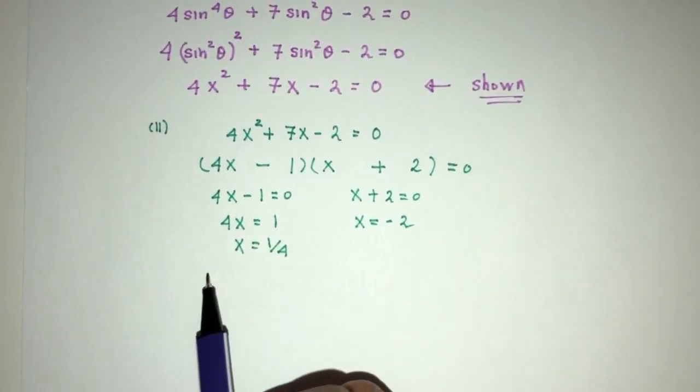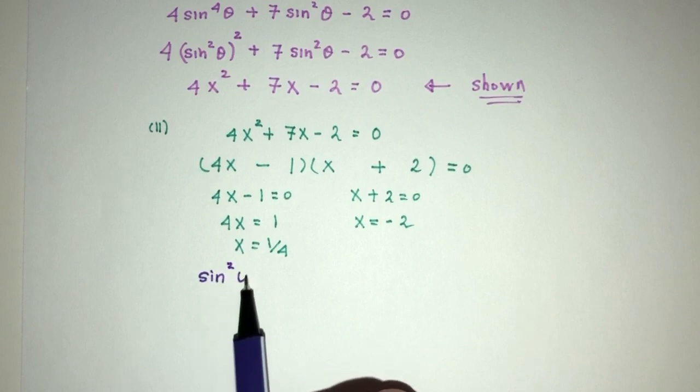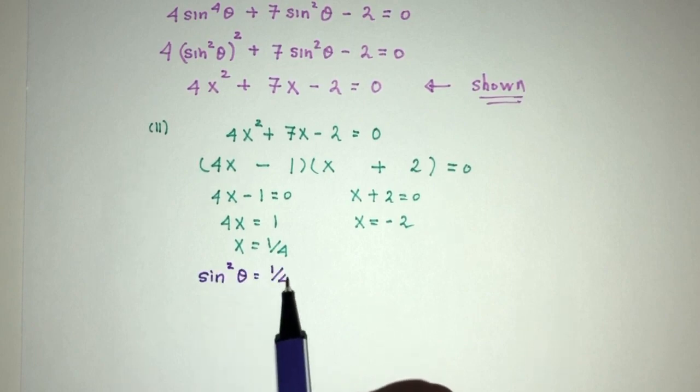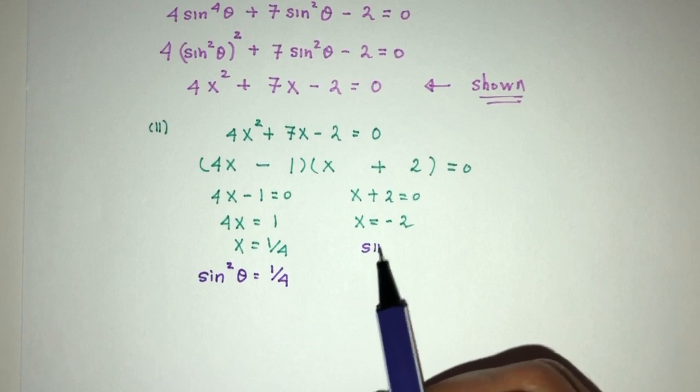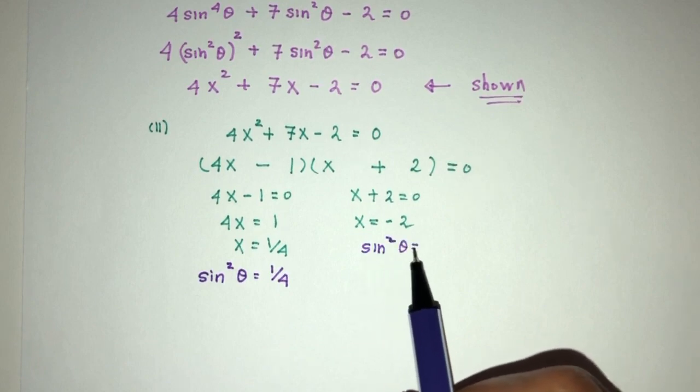Replace back. We know that sin²θ is x, so sin²θ will be 1/4. And here, sin²θ will be minus 2.